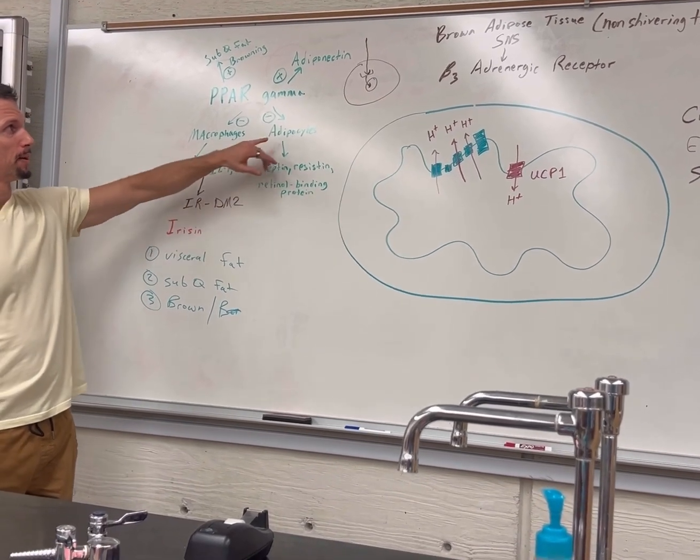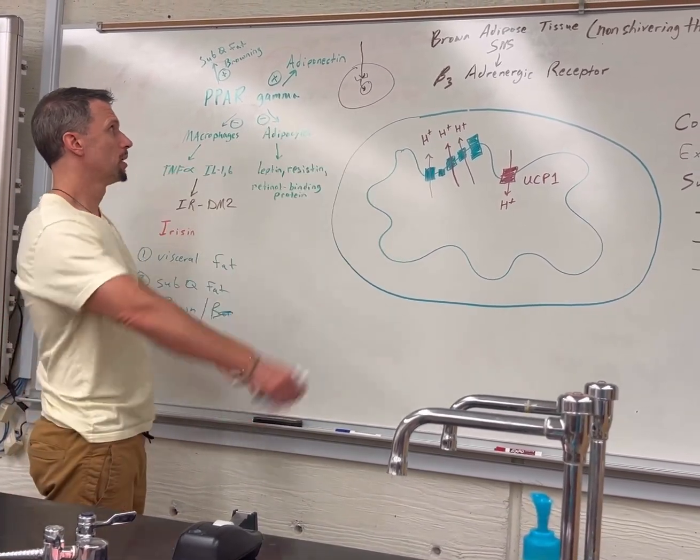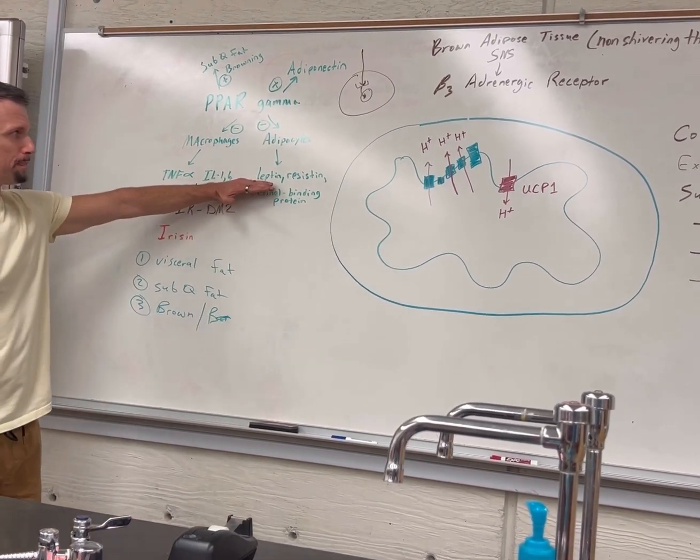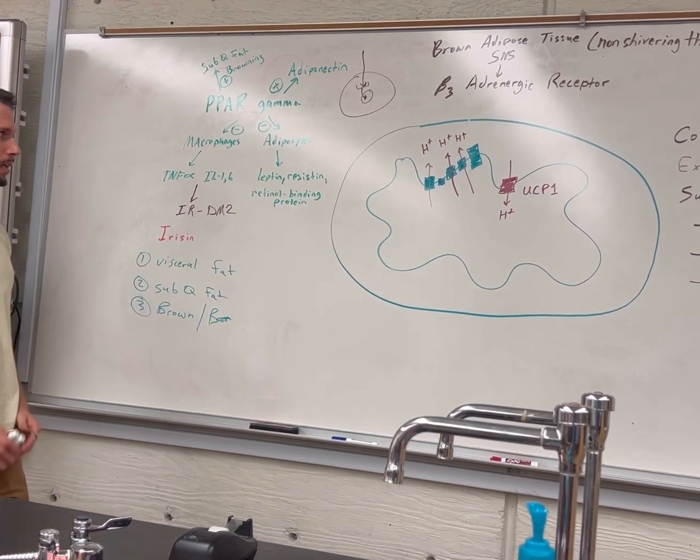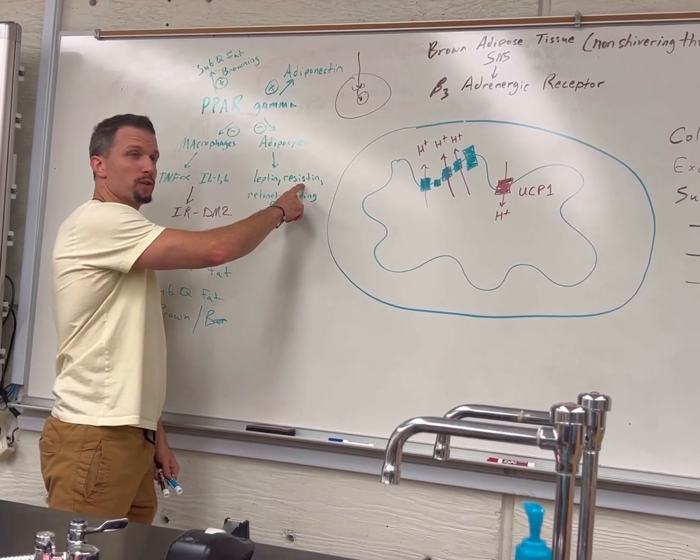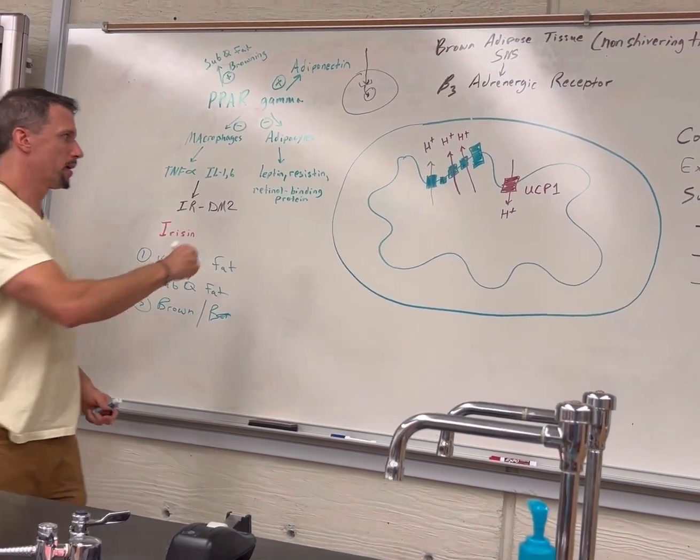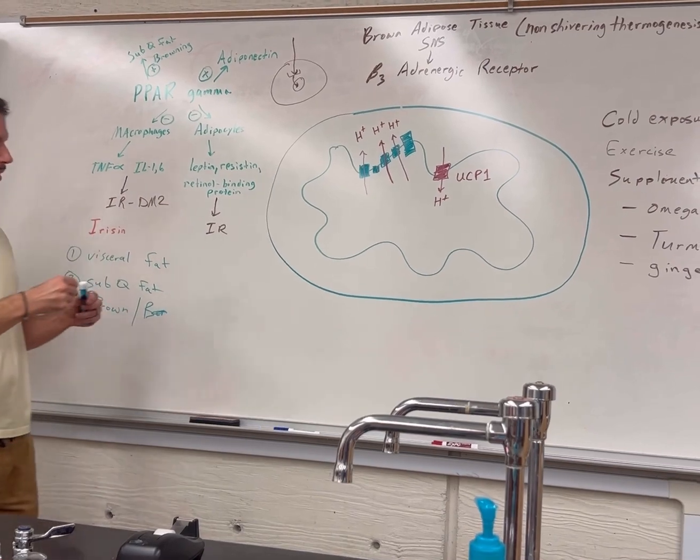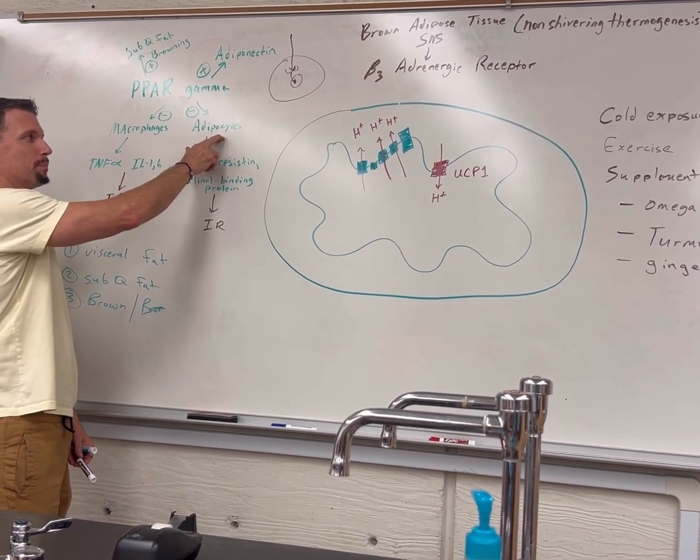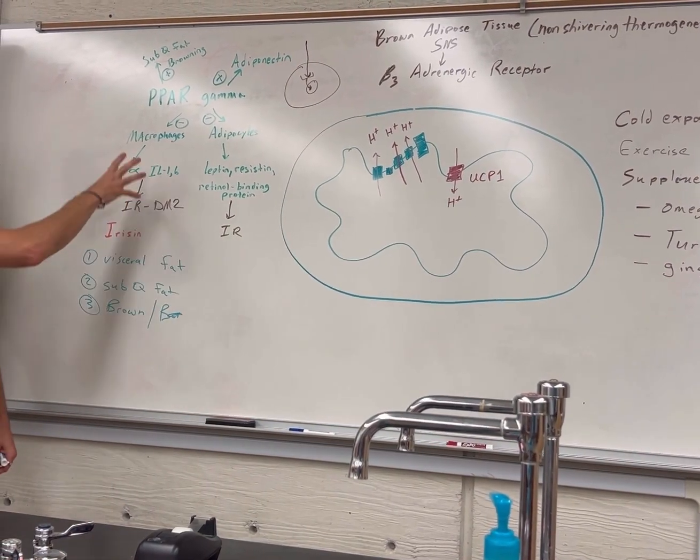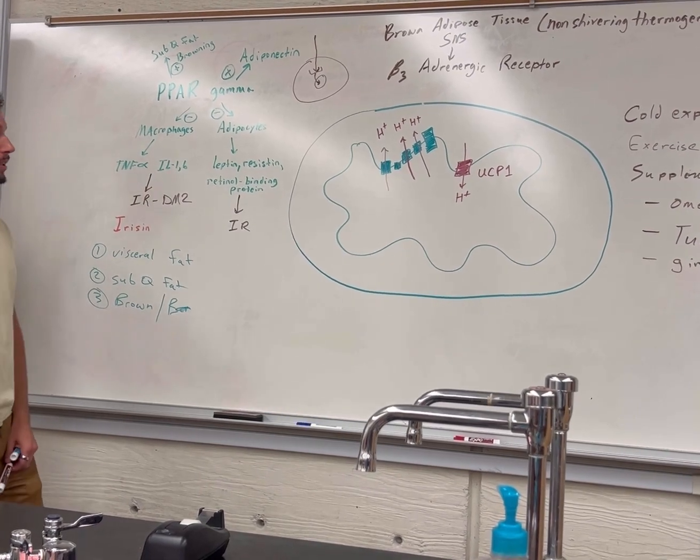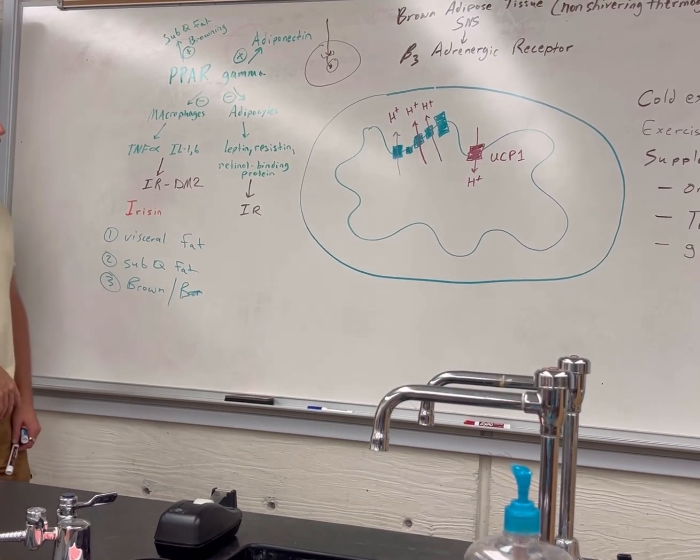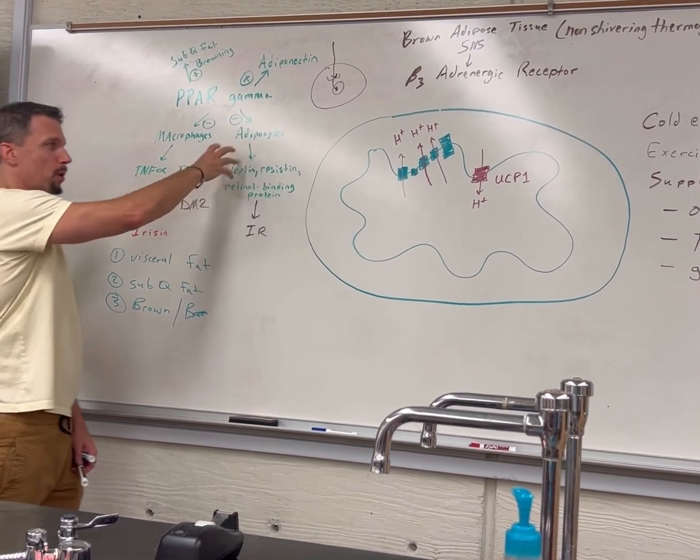There's three other proteins. Imagine this is an adipocyte or fat cell. PPAR gamma bonds to the nuclear receptor, translocates, and represses leptin, resistin, and retinol binding proteins. Resistin causes insulin resistance, and retinol binding protein causes insulin resistance. If we inhibit these adipokines—the signaling molecules released by adipocytes—just like cytokines are molecules released from white blood cells. Now they're showing adipocytes can even release tumor necrosis factor alpha and interleukins. You have all this inflammation and proteins that cause insulin resistance.